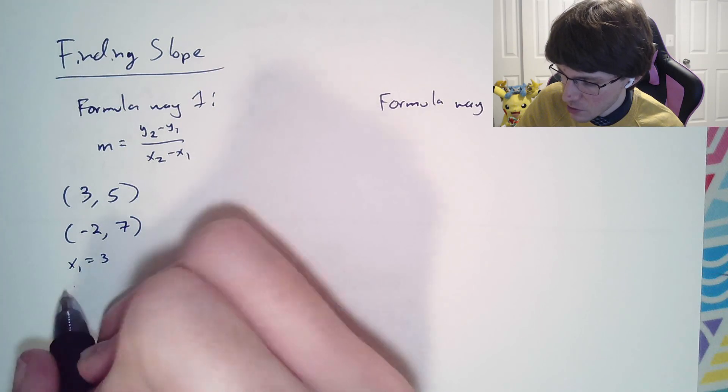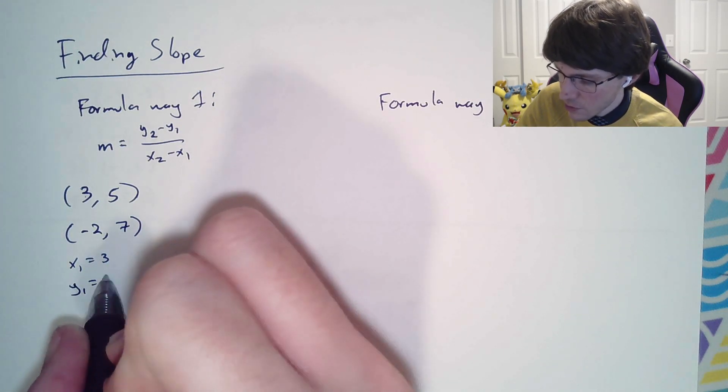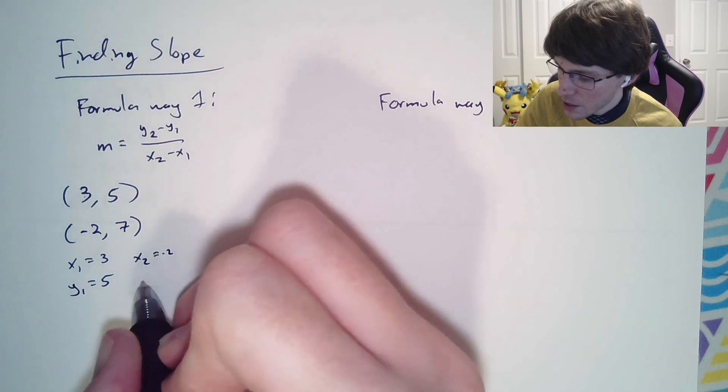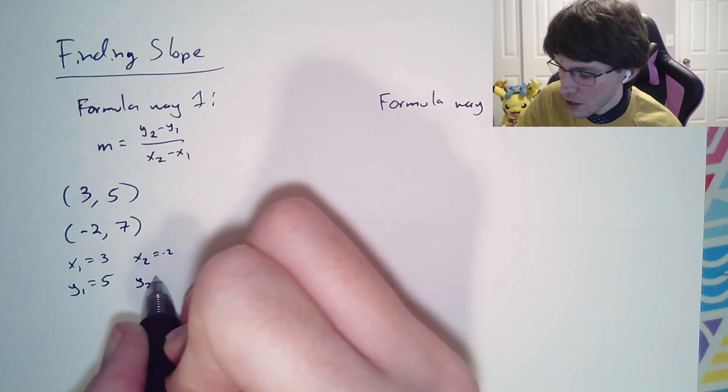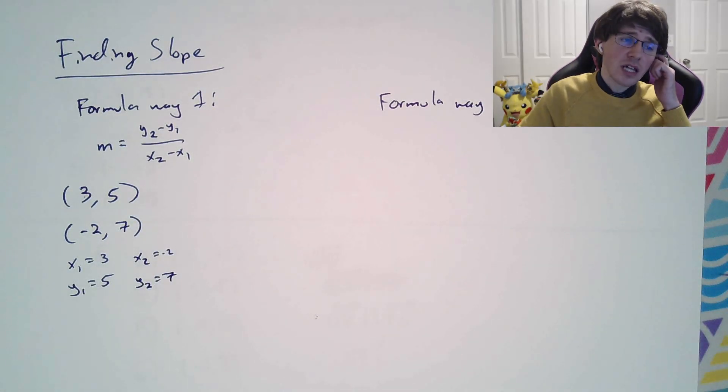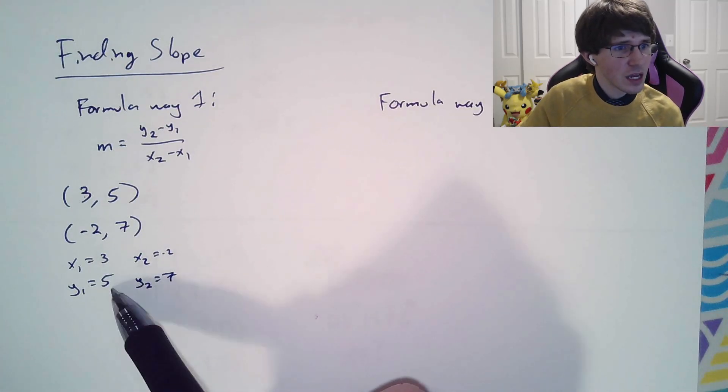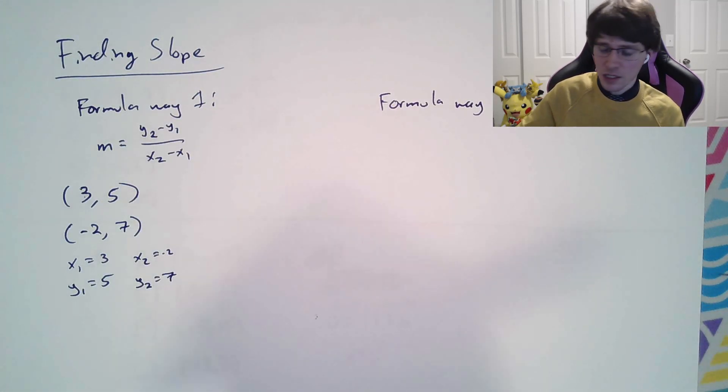My first x value is 3, my first y value is 5, my second x value is negative 2, my second y value is 7. You don't really need to label those all off, but for some people it's helpful because then they can just plug it right into the formula.